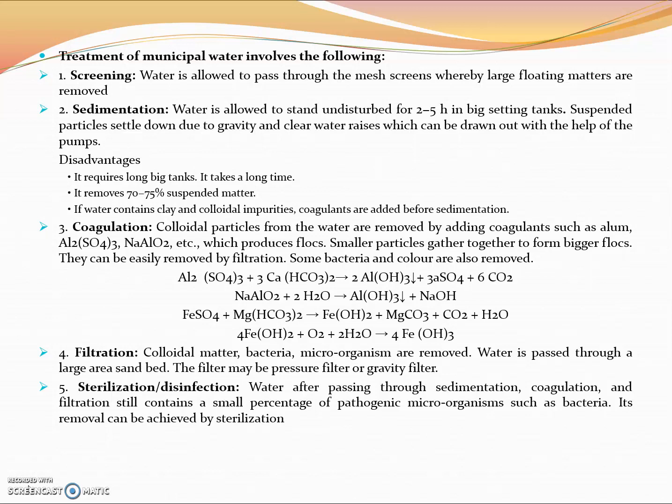The water that passes over the weir is collected and transferred to the filters. This sedimentation and clarification occurs before filtration so the majority of the suspended material can be removed prior to filtration, which avoids overloading the filters, thus allowing much more water to be filtered before the filter must be backwashed. The major drawbacks of the sedimentation process: it requires long big tanks, it takes a long time, and it removes 70 to 75% suspended matter. If water contains clay and colloidal impurities, coagulants and other flocculating agents should be added before sedimentation.